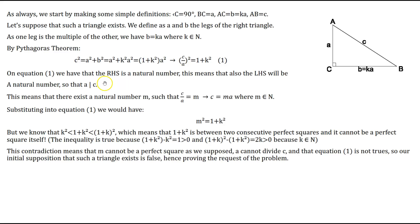In equation number 1, the right-hand side is a natural number because K is a natural number. So the left-hand side must also be a natural number, meaning A is a divisor of C — that is, C is divisible by A. Therefore, there exists a natural number M such that C divided by A equals M, or C equals M times A. Substituting into equation number 1 gives us M squared equals 1 plus K squared.